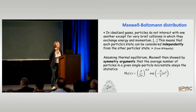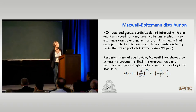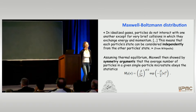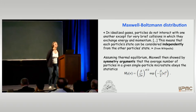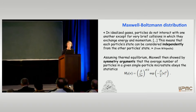In idealized gases, particles do not interact with one another except for very brief collisions in which they exchange energy and momentum. This means that each particle state can be considered independently from the other particle states. This sentence is a little bit unclear because you have to assume both the fact that the particles do not know each other, and of course that the particles do know each other because they have to collide. So if you would like a mathematically rigorous theory of gases, you have to be a little bit more precise.